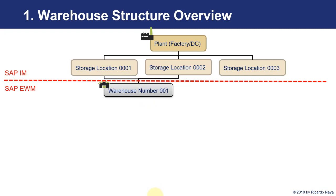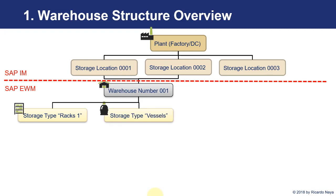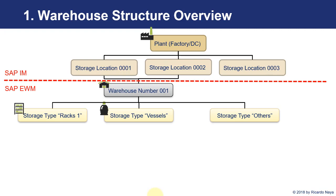Below the warehouse number, we are going to have the different storage types. These are different areas inside this plant. For instance, we can have an area of racks, we can have an area of vessels. This depends a lot on the business and how we want to model our warehouse, so we can define different storage types. Sometimes they are defined based on the location where they are, and sometimes they can be defined based on the products or materials that they are going to hold. For instance, we can have a storage type for finished goods or we can have a storage type for raw materials.